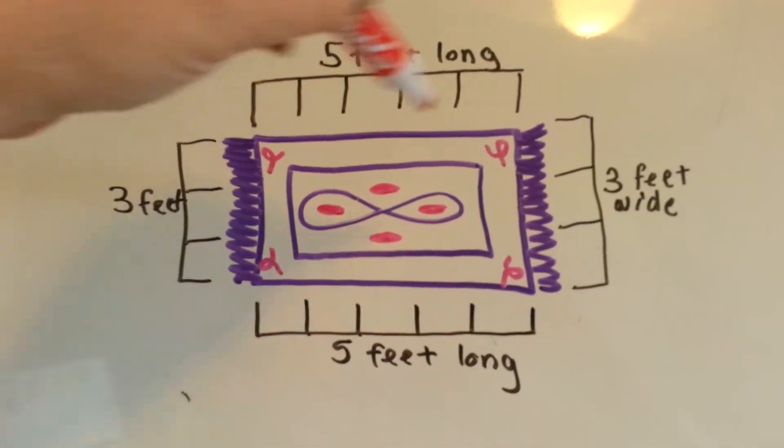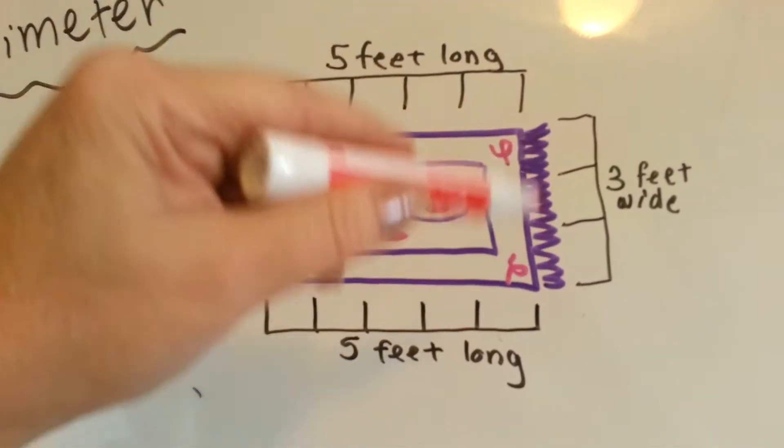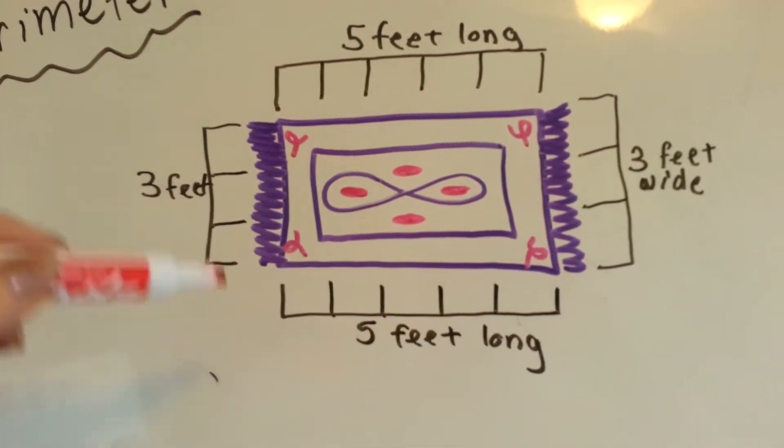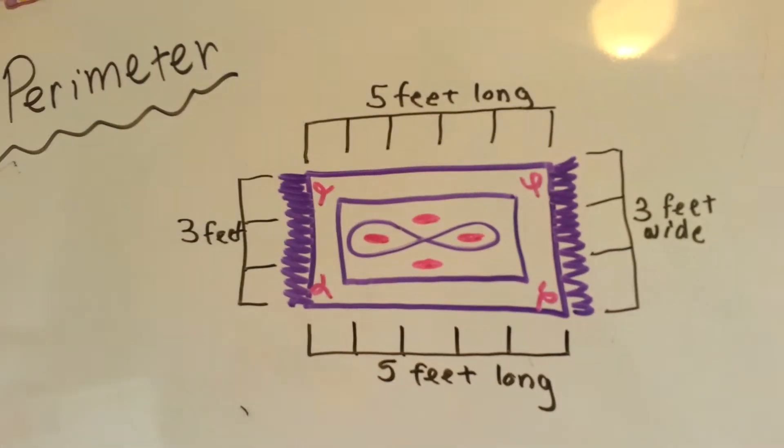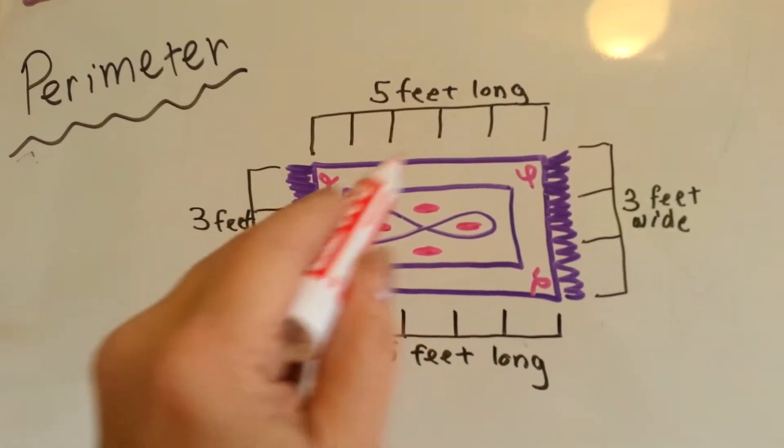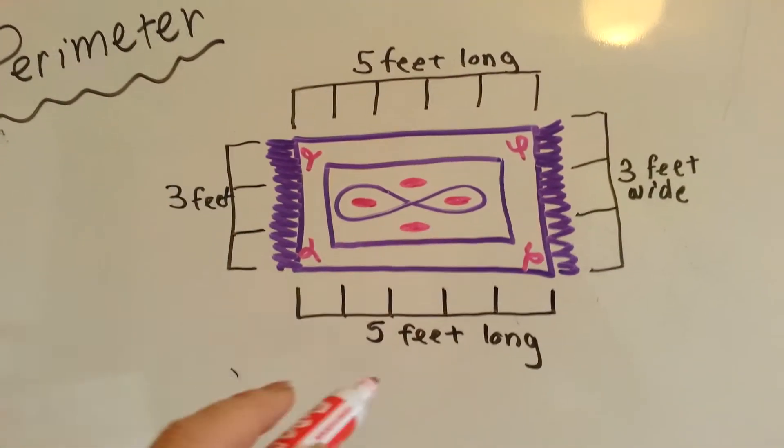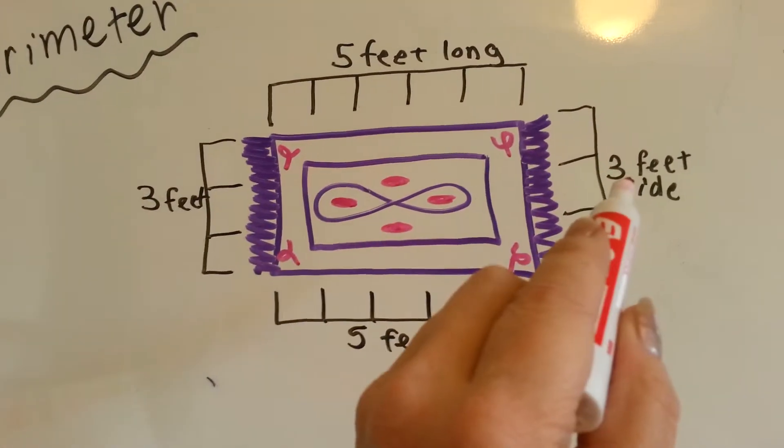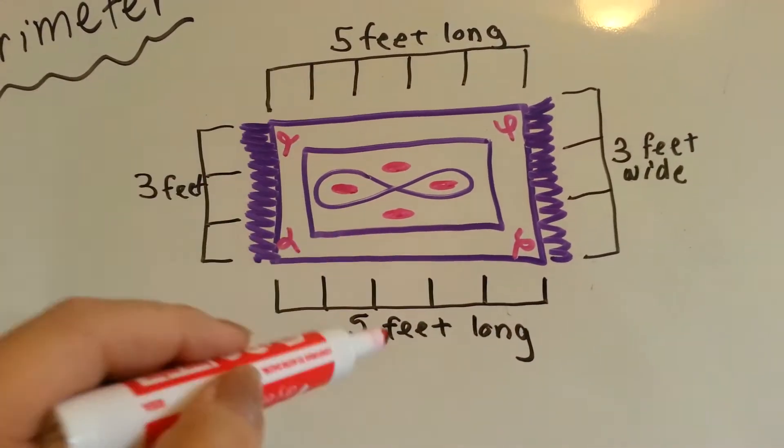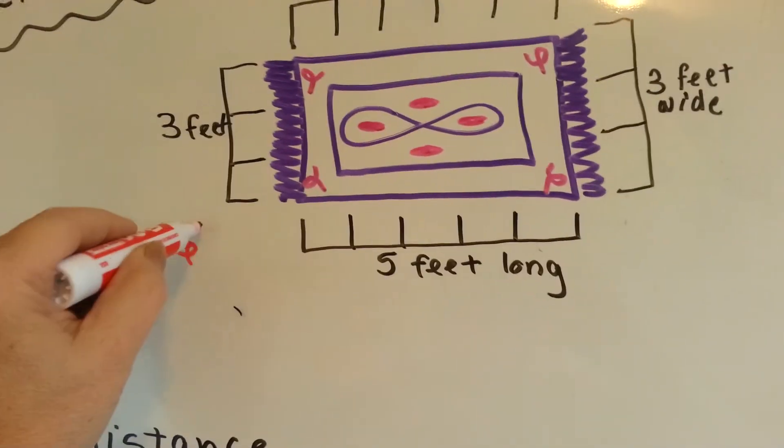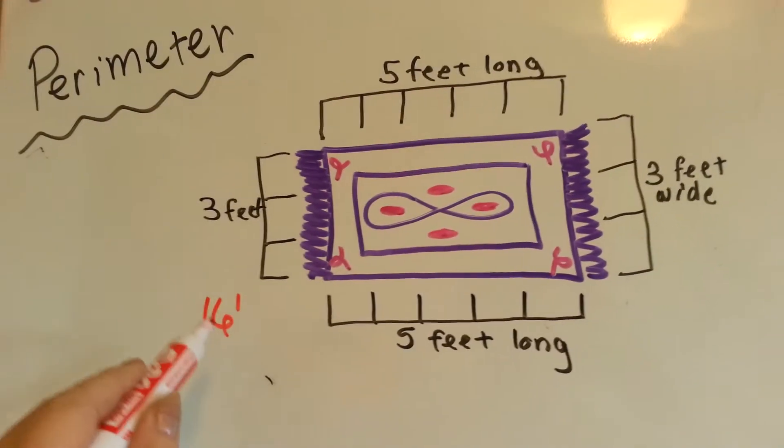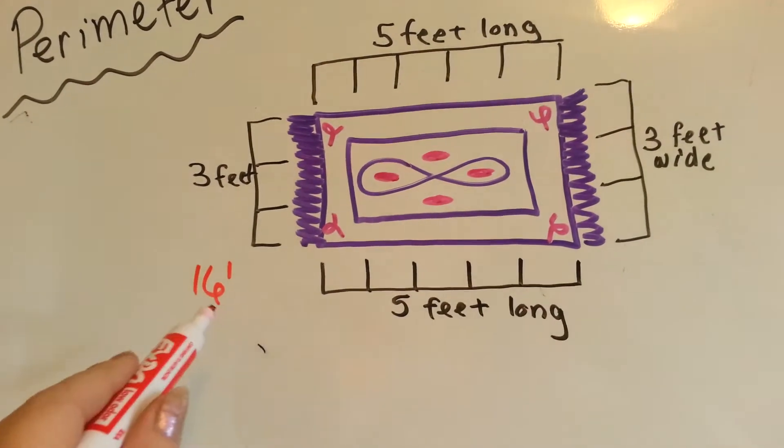This is 5 feet long, this is 3 feet wide, 5 feet long, 3 feet wide because it's a perfect rectangle rug. To find its perimeter, we add up all these distances. 3 and 3 is 6, 5 and 5 is 10, 10 and 6 is 16. So the perimeter of this rug is 16 feet.